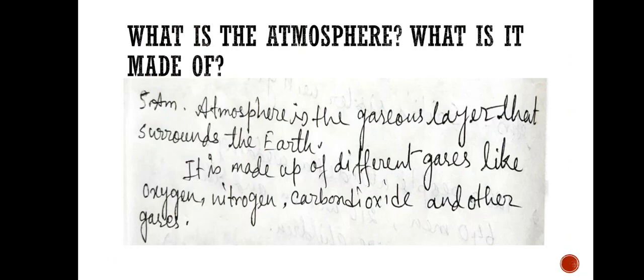Next question: What is the atmosphere and what is it made of? Atmosphere is a gaseous layer that surrounds the Earth, and it is made up of different gases like oxygen, nitrogen, carbon dioxide, and other gases. More the simple answer.